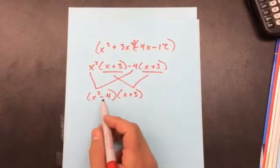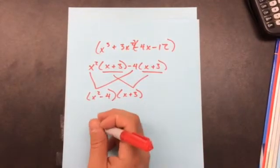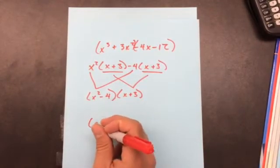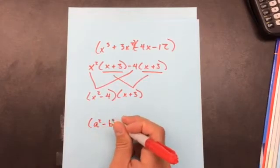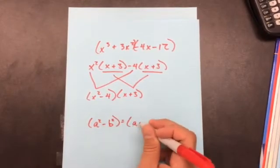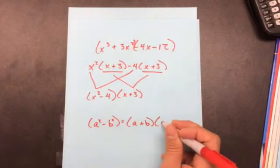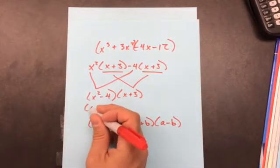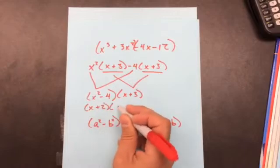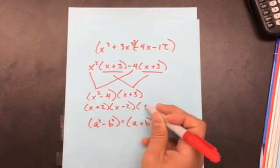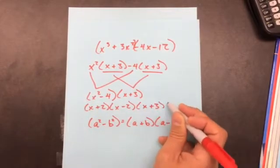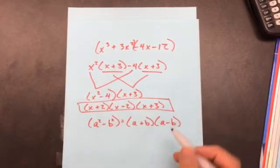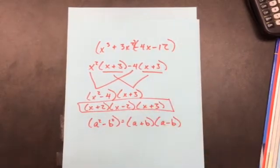Now this is the difference of two squares. What the difference of two squares is, is it means if I have a^2 - b^2, we already looked at this. It's going to be a + b, a - b. We did this a long time ago. And that's what this is. So it's going to be x + 2, x - 2. And don't forget the x + 3 that we just found. So this is all the factors of this guy up here. And that's the answer.